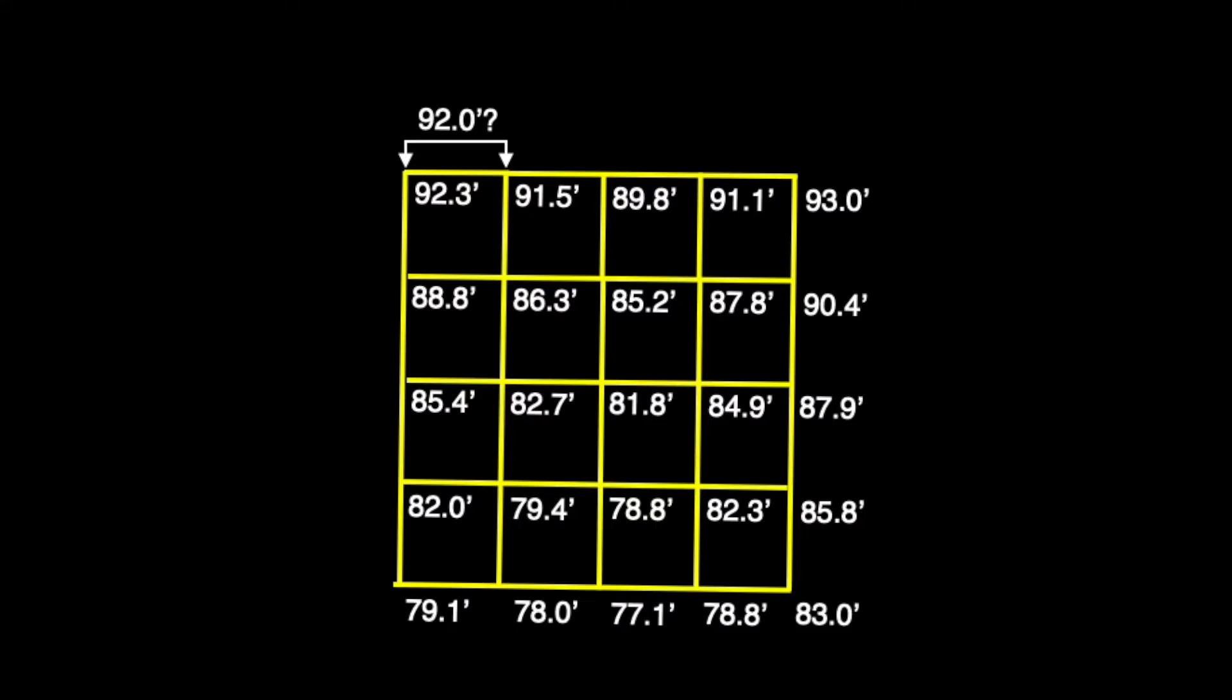In order to reveal where this 92 foot mark rests on this horizontal line, the process of graphic interpolation will require us to divide the line into equal divisions or units.